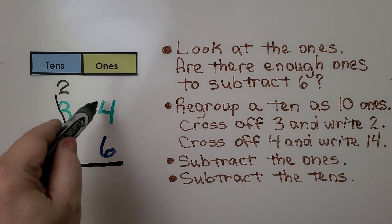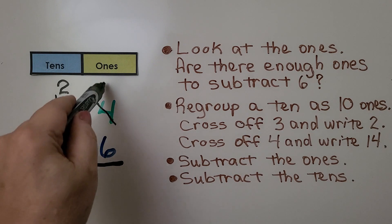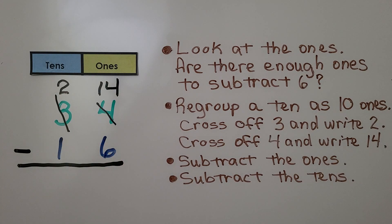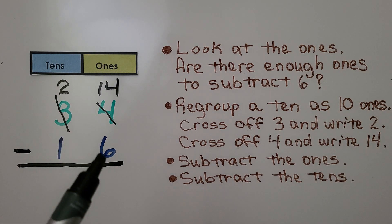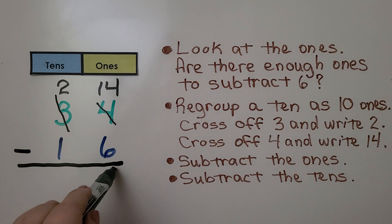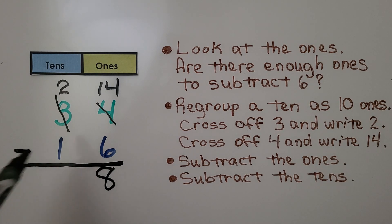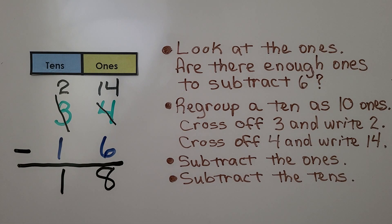So we don't have four ones anymore — we have fourteen ones. Now we do have enough ones to take six away. Fourteen minus six is equal to eight. Now we subtract the tens: two tens minus one ten is one ten. That means 34 minus 16 is equal to 14.